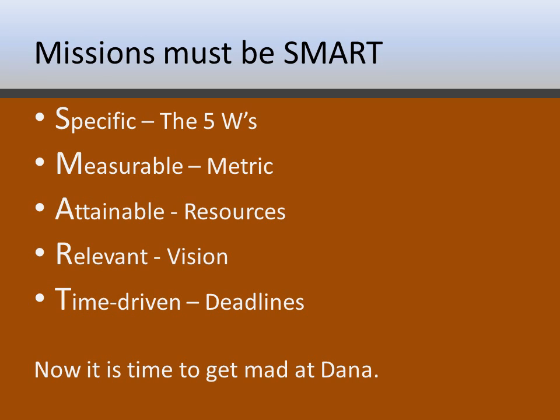A mission should be SMART: Specific, Measurable, Attainable, Relevant, and Time-driven. To be specific, your mission statement explains who is going to be involved in the mission and who the mission benefits. By measurable, it means there needs to be some kind of metric — a number, a quality like a percentage or fraction, and a time frame — some measurable component to your mission statement that helps keep you accountable.